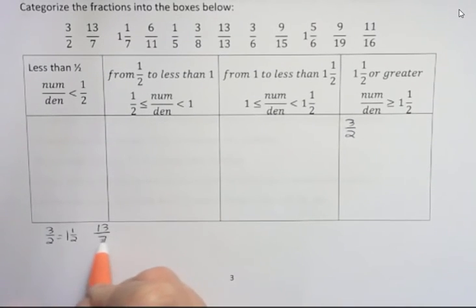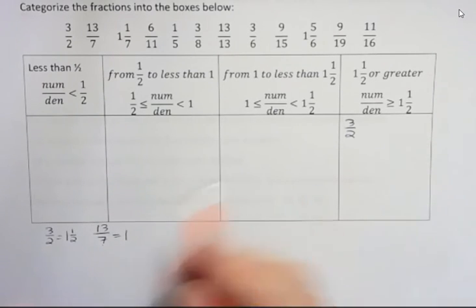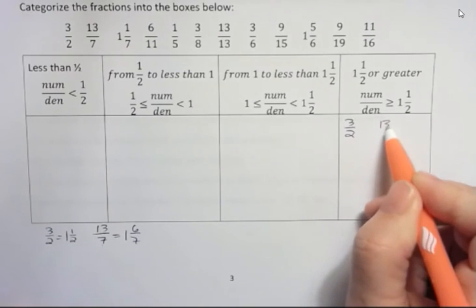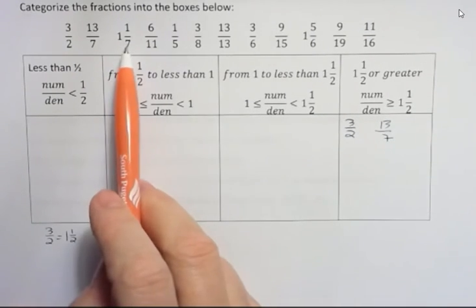13 sevenths. Well, 13 over 7, 7 goes into 13 one time with 6 left over. Do you see how 6 is almost 7? So we're almost to another whole. If I had 14 over 7, I'd have 2, right? So that's definitely greater than 1 and a half as well.